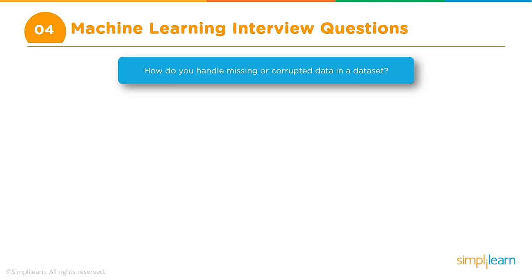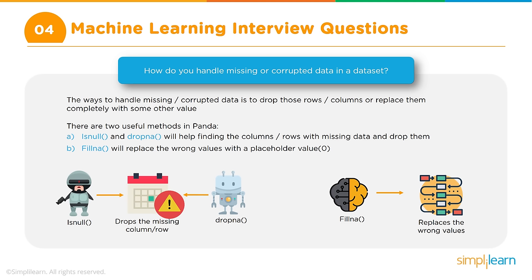Questions around data handling and missing data have no single correct answer — it varies by situation, the type of data, how critical it is, what kind of data is missing, and the type of corruption. The best way to respond is to illustrate from your own experience, describing the kind of data and the specific missing value problems you encountered.